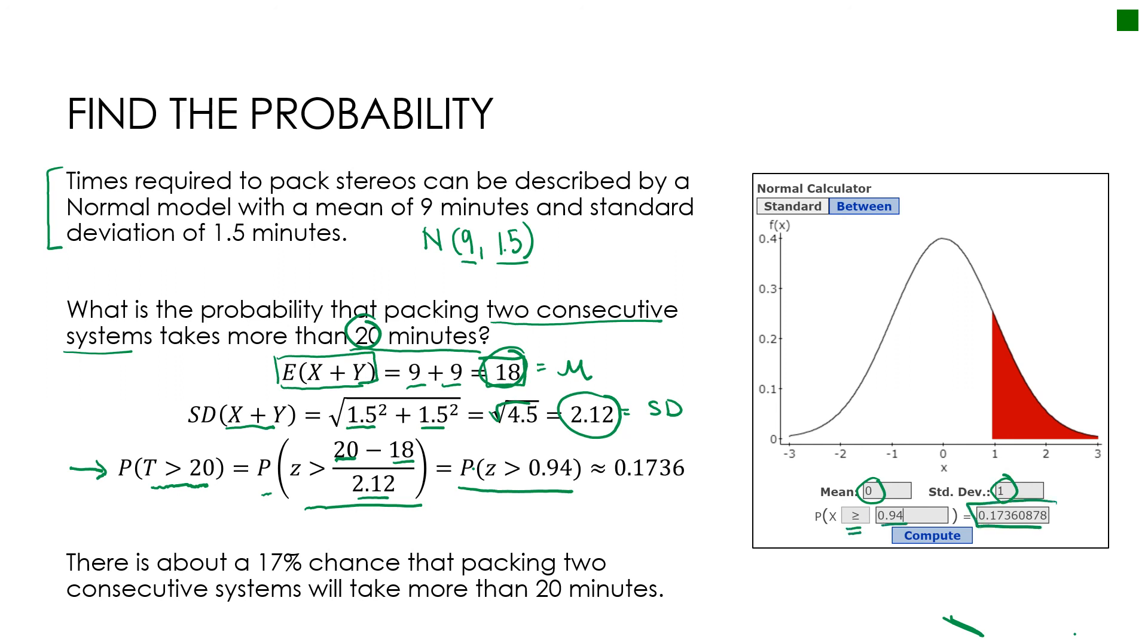And that gave me my solution, which is about 0.1736. So there's about a 17% chance that packing two consecutive systems will take more than 20 minutes.